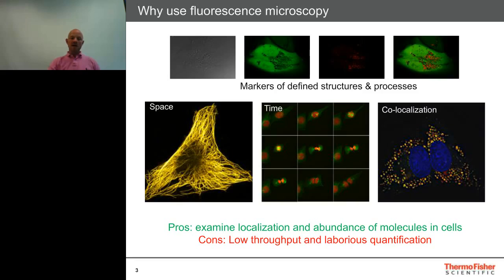However, some drawbacks of fluorescence microscopy include throughput and quantification — it can be rather time consuming to acquire a lot of images and bring them into quantification software to derive numbers. Because as nice as the pictures from the microscope are, without quantification they're really not much use for answering biological questions.